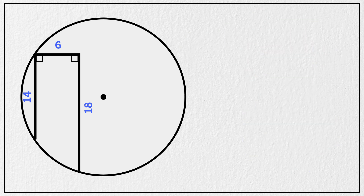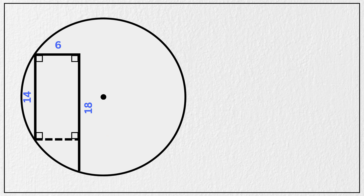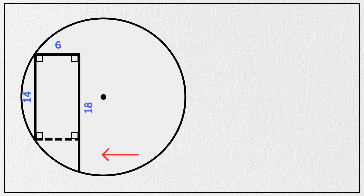First, draw a line that is parallel to the 6-unit segment, just like this. Since this full vertical segment is 18 units and this chord is 14 units, this small portion here must be 4 units.